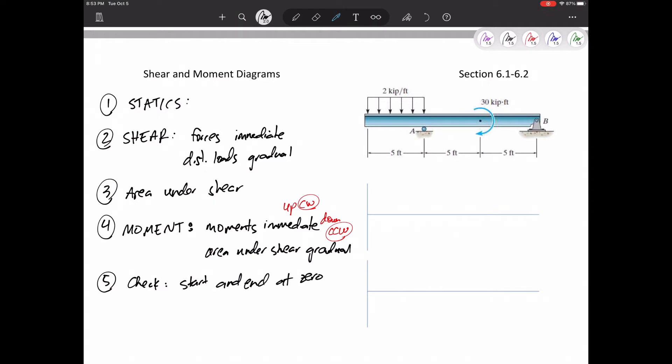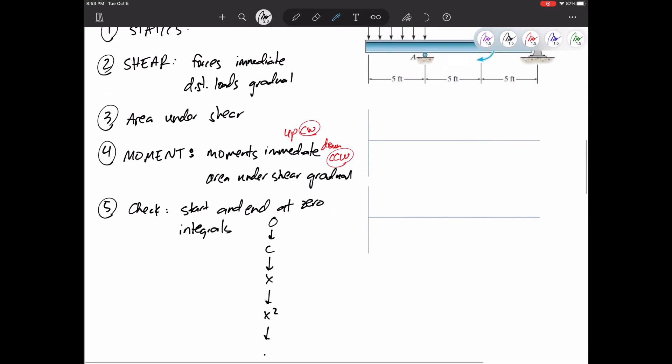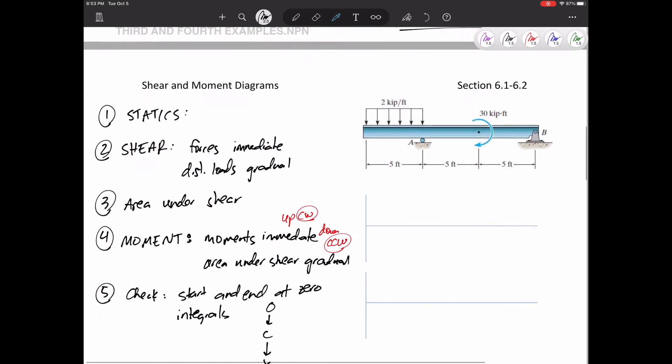Is the one below it the integral of the one above it? Is it going from nothing to constant to a linear X to an X squared to an X cubed? So those are my five thoughts as I'm doing my shear and moment diagram.